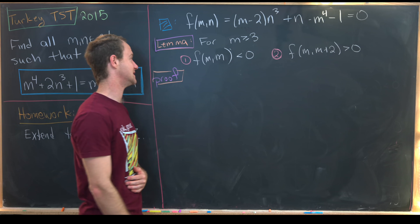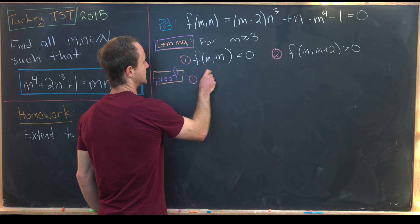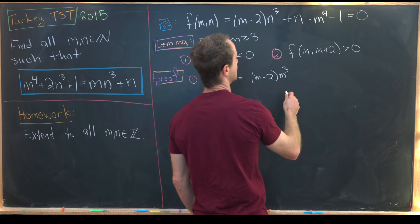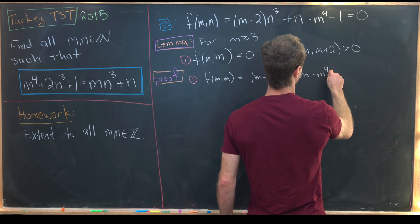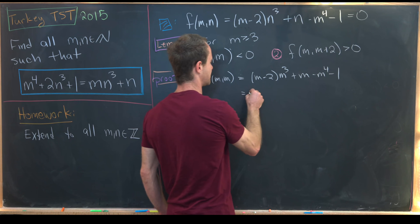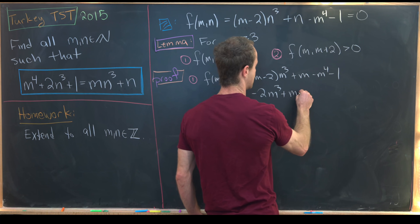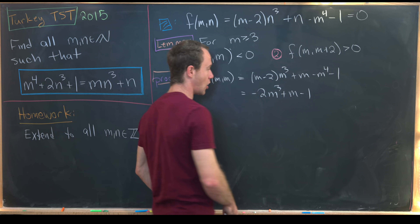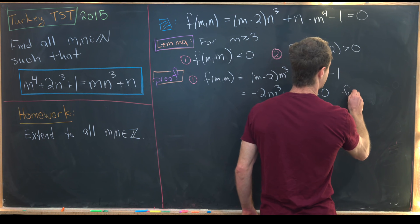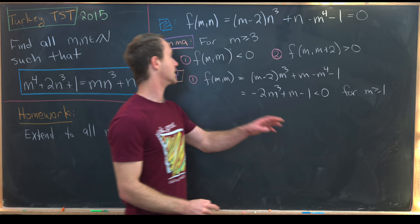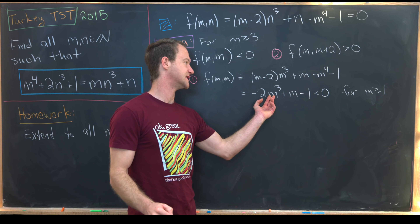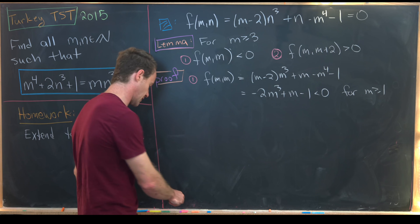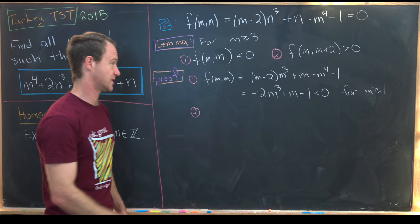For part 1, by direct calculation: f(m, m) = (m−2)·m³ + m − m⁴ − 1, which simplifies to −2m³ + m − 1. The m⁴ terms cancel, and it's easy to see this is always less than 0 — in fact for all m ≥ 1 — because the m³ term dominates the m term, and it even carries a coefficient of −2.